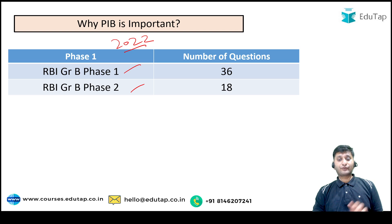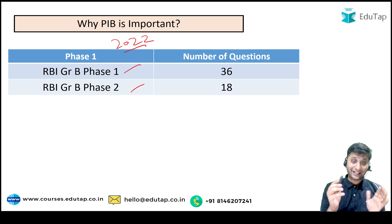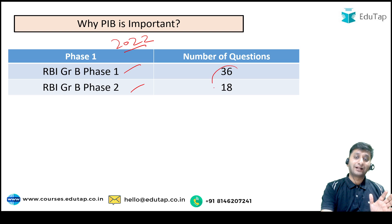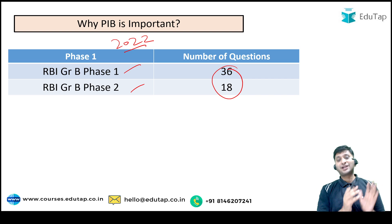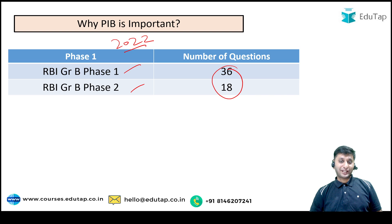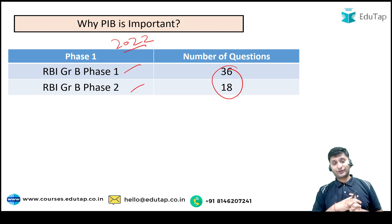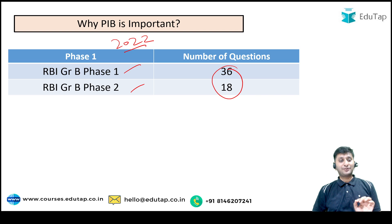These 36 to 38 questions are from Phase 1. Similarly, in Phase 2, around 18 out of 30 questions came from PIB — directly or indirectly. Indirectly in the sense that if some scheme was in news on PIB, it was asked from different angles in the exam. From this you can gauge why it is crucial to cover PIB.